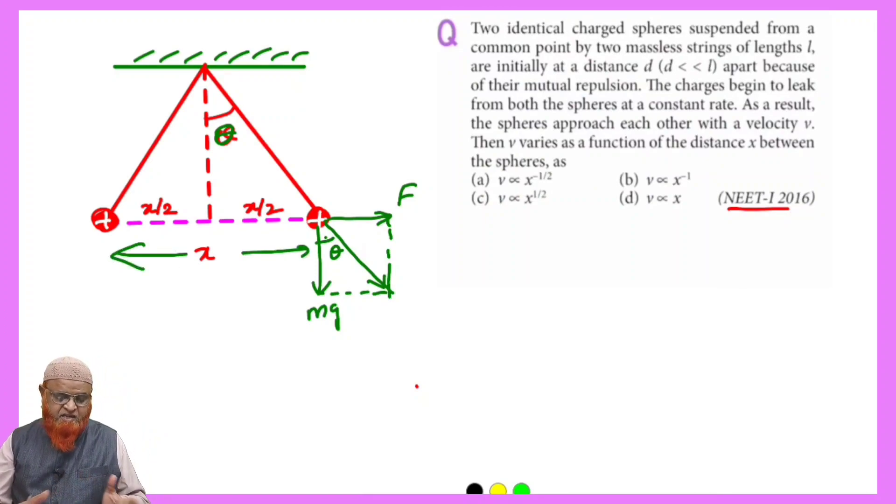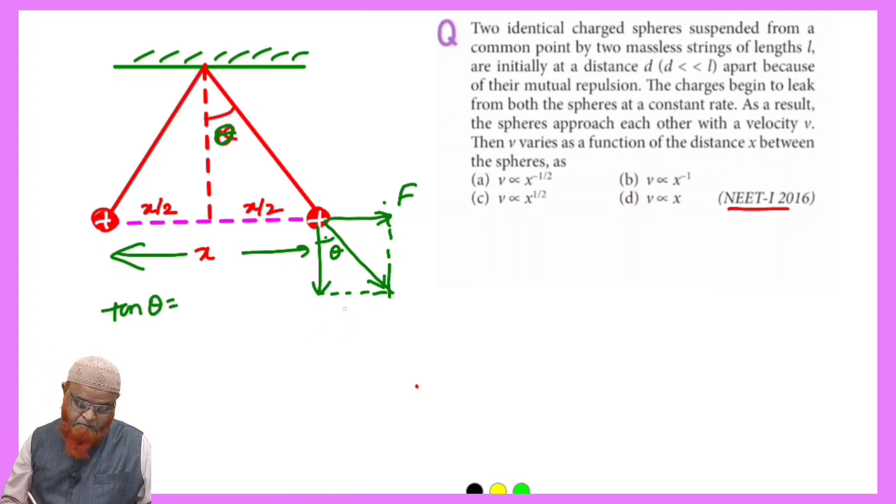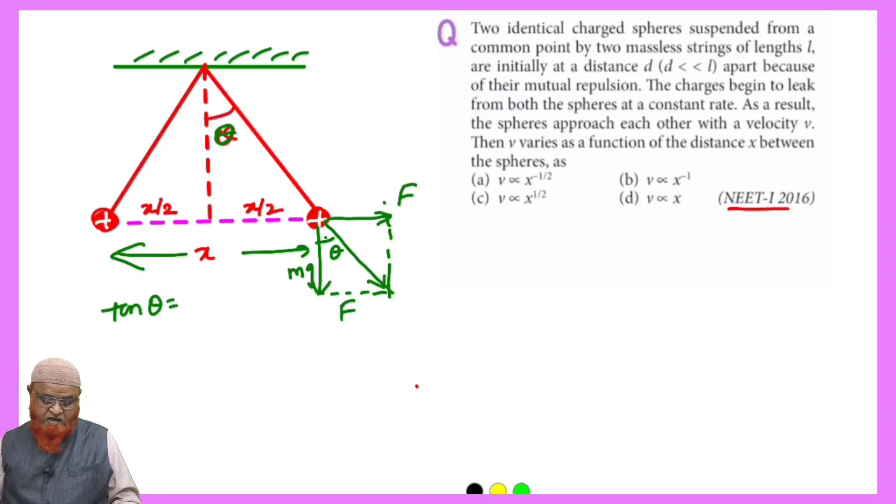Then after that we can write, this is the opposite side F and this is the adjacent side mg. So like this we can consider.